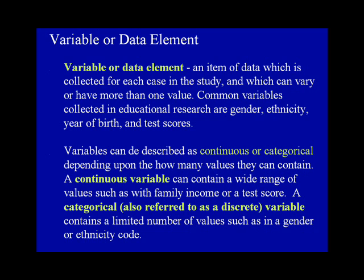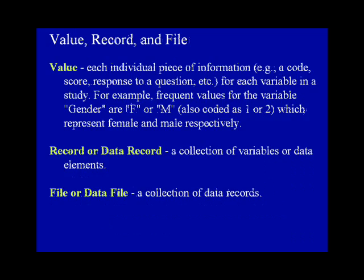Value, Record, and File. A value is each individual piece of information such as a code, a score, or response to a question for each variable in a study. For example, frequent values for the variable gender are F or M, also coded as 1 or 2, which represent female and male respectively. A record or data record is a collection of variables or data elements. A file or data file is a collection of data records.